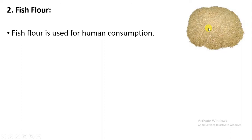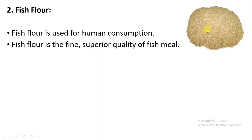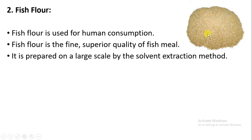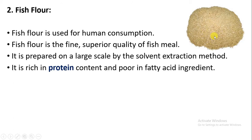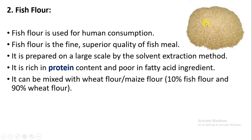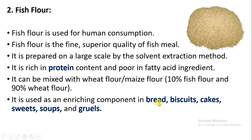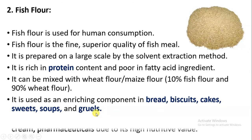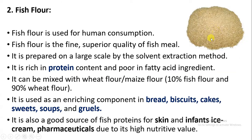Fish flour is used for human consumption and is a superior quality fish meal in fine powdered form. It is prepared on a large scale by the solvent extraction method. Fish flour has a high content of protein and very low fat. About 10 percent fish flour is mixed with 90 percent wheat flour and used as an ingredient in bread, biscuits, cakes, sweets, soup, and grills. It also has good protein content for skin and infant nutrition, and is used in ice creams and pharmaceutical industries due to its high nutrient content.